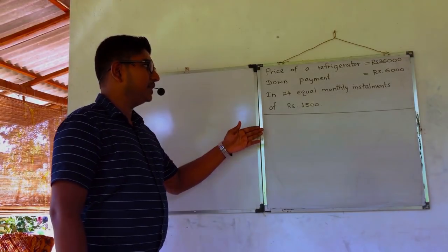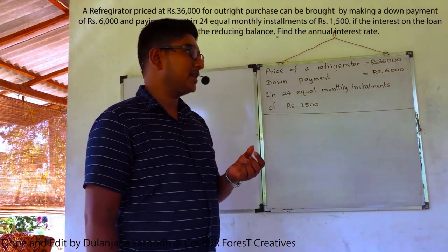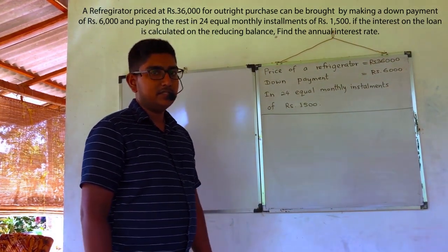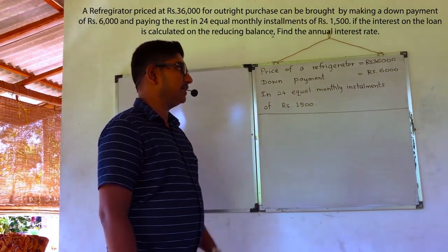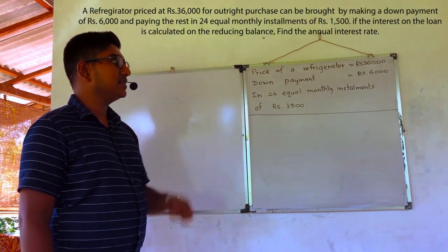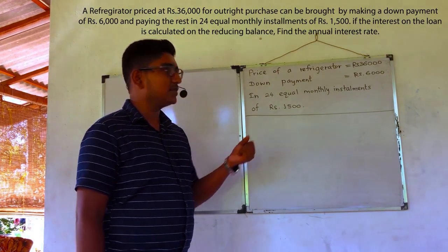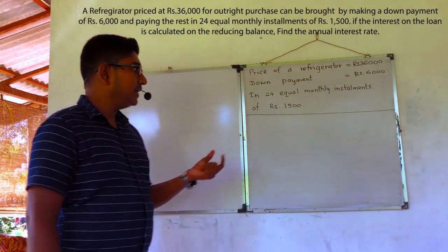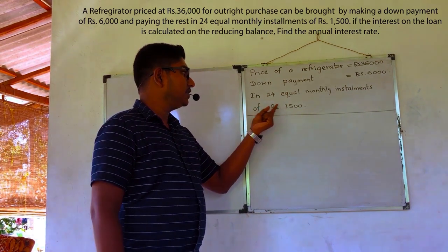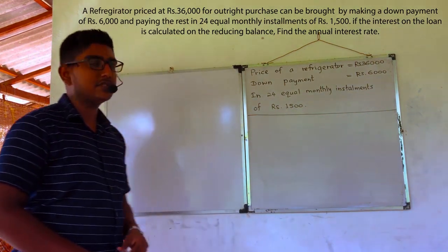This is our third example. It is a little bit different from the first two examples because here the value of a monthly installment is given. The value of a monthly installment is 1500. The price of a refrigerator is 36000 rupees, we have to pay a down payment of 6000 rupees, and we have to settle the loan in 24 equal monthly installments where the value of one installment is 1500.